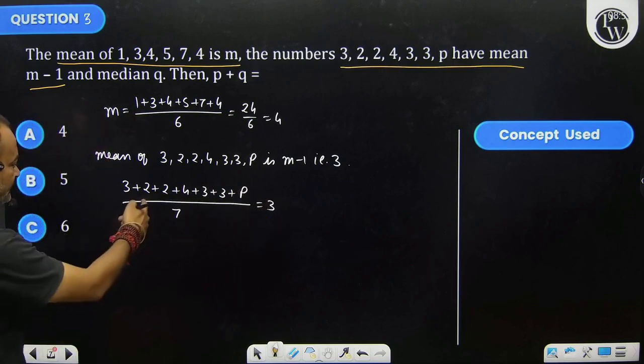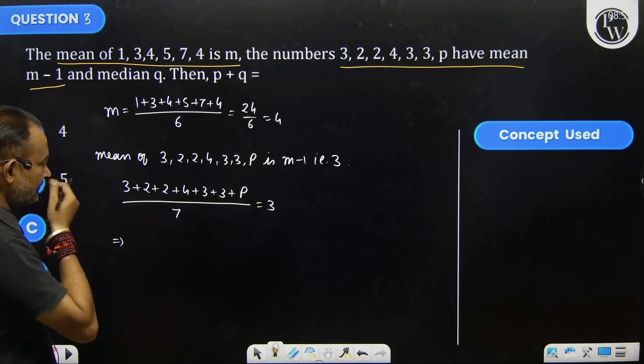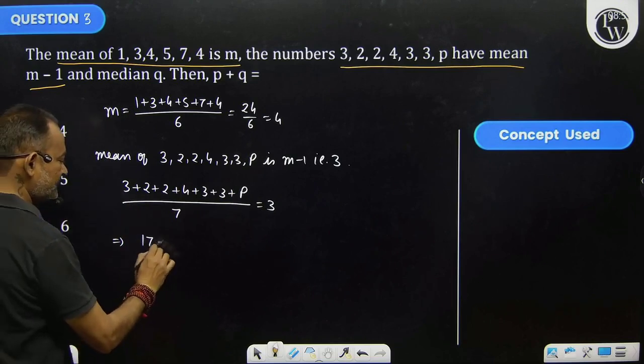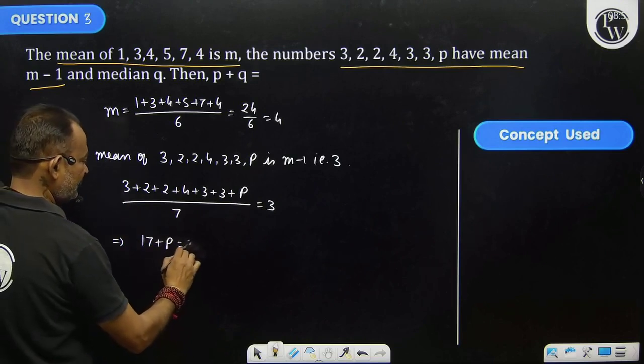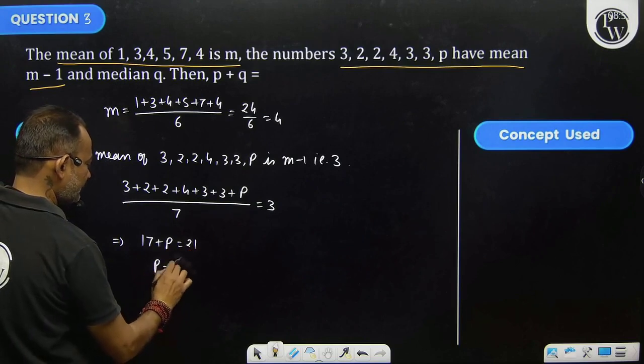Then what is this? 5, 7, 7 plus 17 plus p equals 21. Then p is equal to 4.